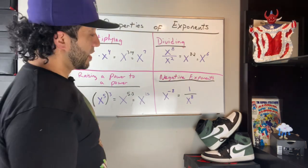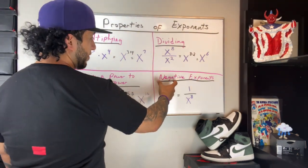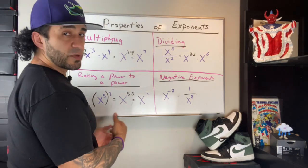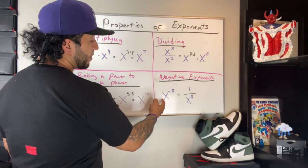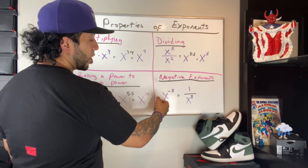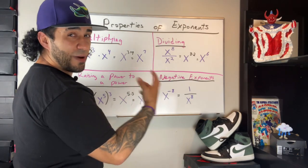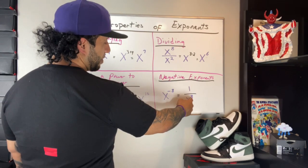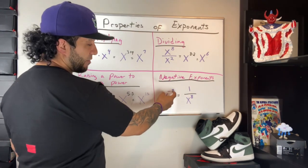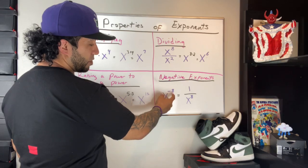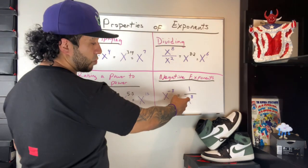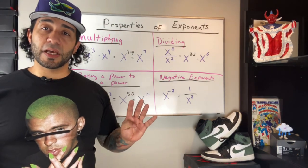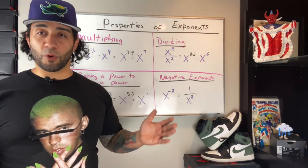Last but not least, in the event you have a negative exponent. A negative exponent can be rewritten as a reciprocal. Here you have x to the negative eighth power. I want you to remember to rewrite that as 1 over x to the eighth. What we've done is taken that negative exponent, rewritten it as a positive, and put it under 1 — that's the reciprocal. So there you have it. Those are just four instances of some of the laws or some of the properties of exponents.